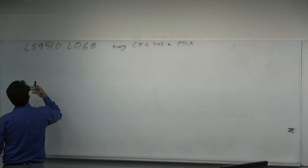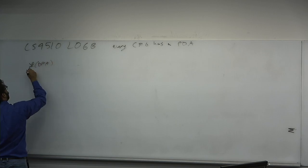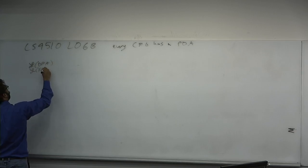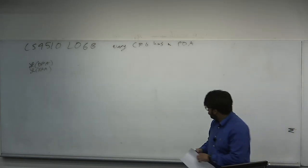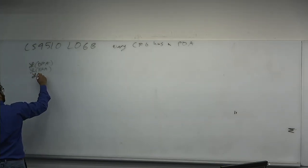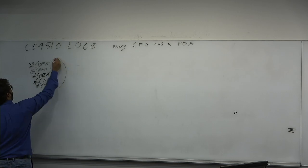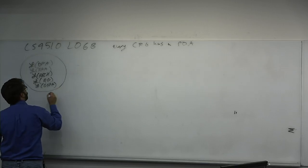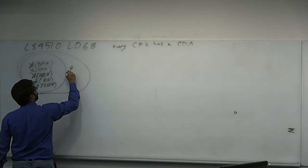We've proved around five or six kinds of regular devices — DFA, NFA, regular expression, regular grammar, and GNFA, and maybe some more. These are all regular languages. And then we've proved that every regular language was context-free.